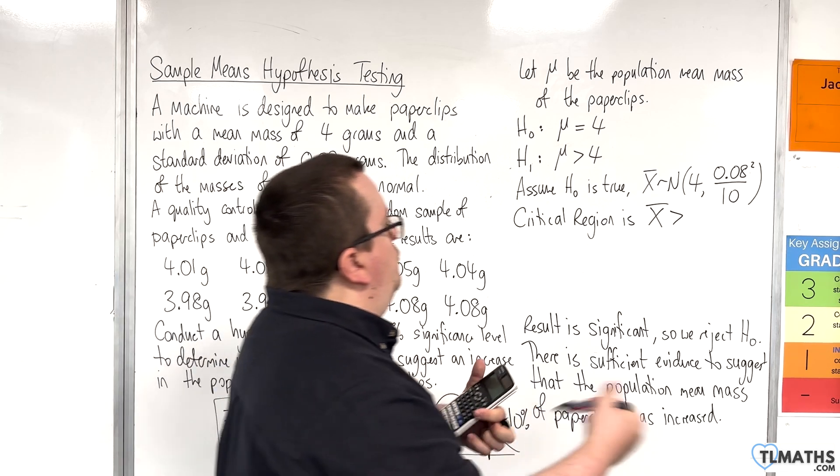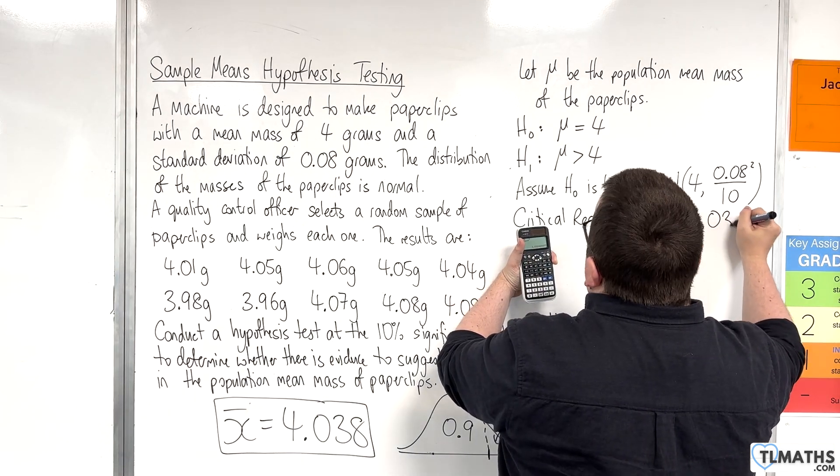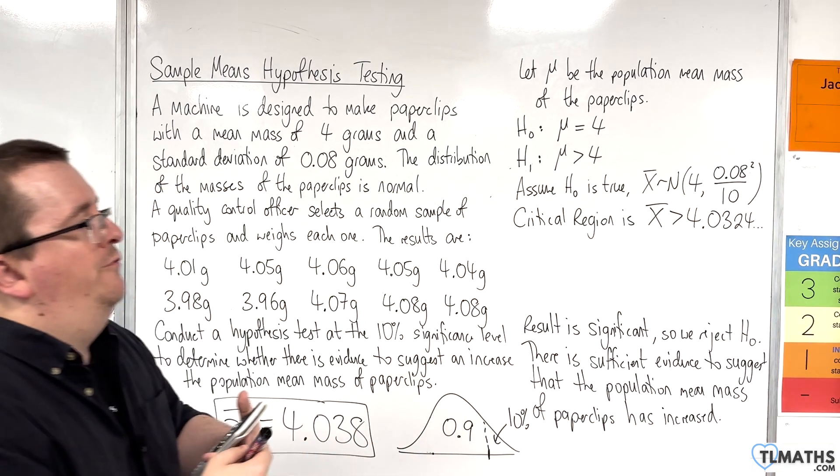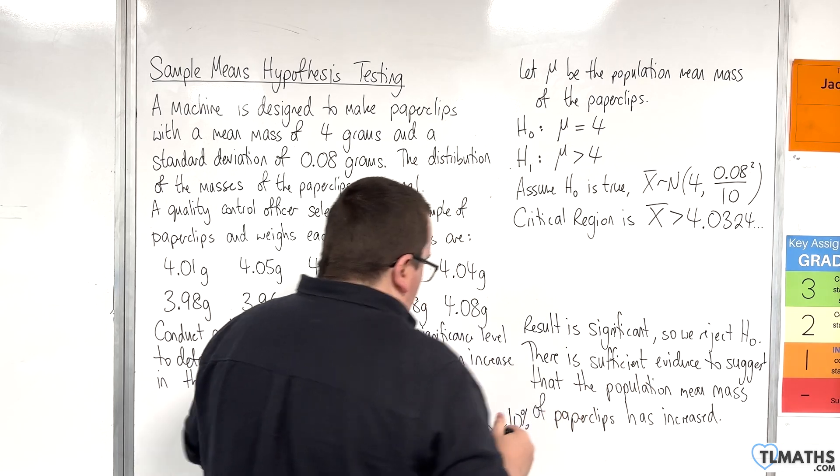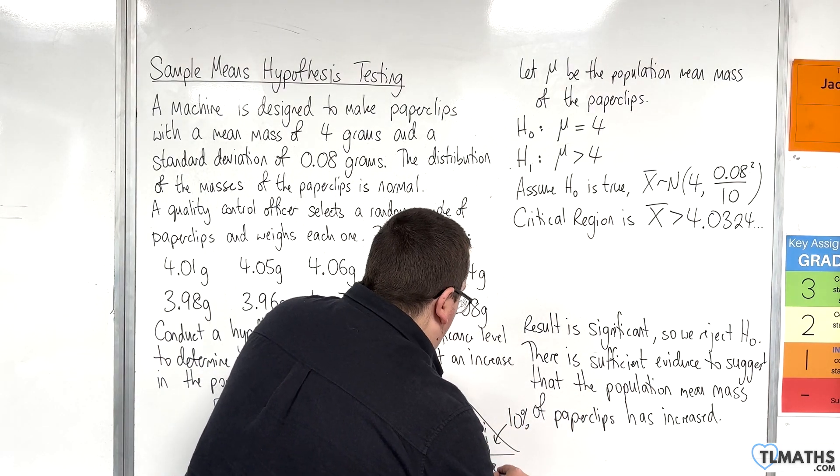So, the critical region is 4.0324. So, visually speaking, this is your 4.0324.